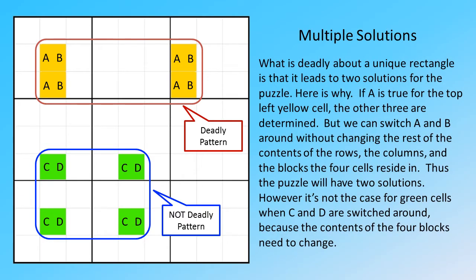What is deadly about a unique rectangle is that it leads to two solutions for the puzzle. If A is true for the top left yellow cell, the other three are determined.